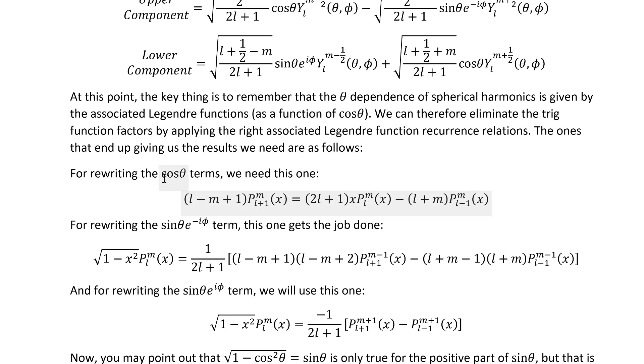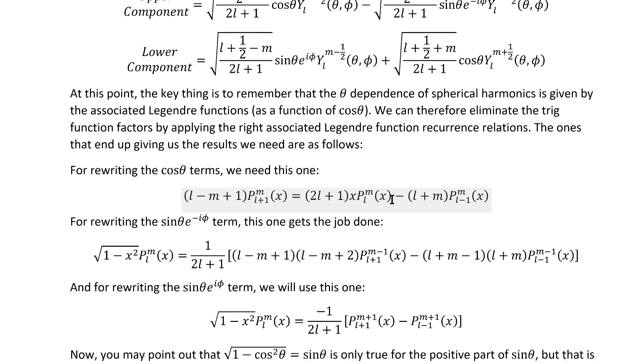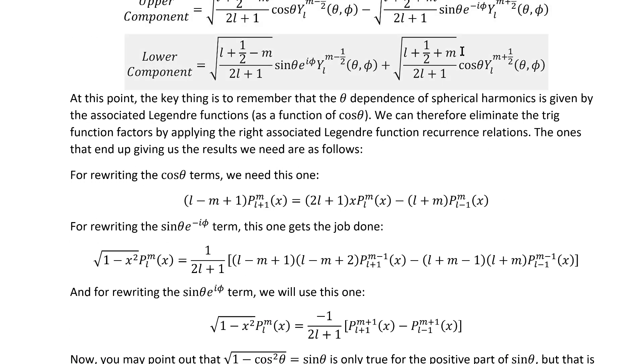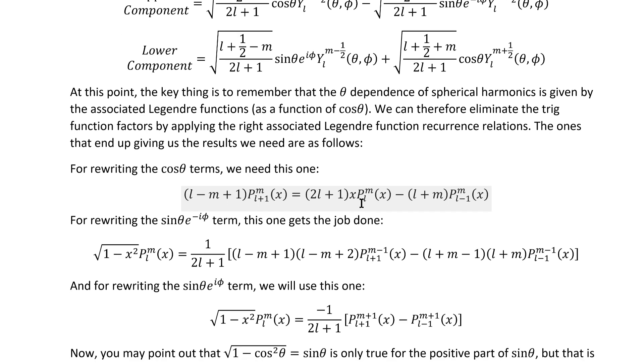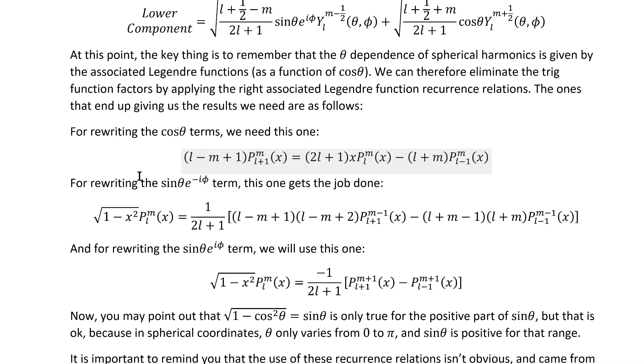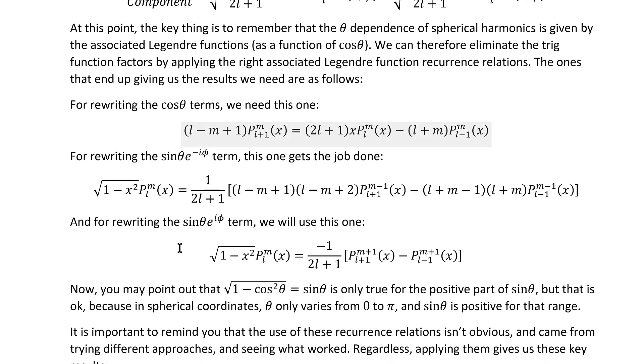For rewriting the terms with the cosine theta factors out front, this one ends up doing the job. For rewriting the terms with the cosine theta factors out front, this recurrence relation gets the job done. For rewriting the term with the sine theta e to the minus i phi factor out front, this one ends up being useful. And for rewriting the sine theta e to the i phi term, this one ends up getting the result we need.